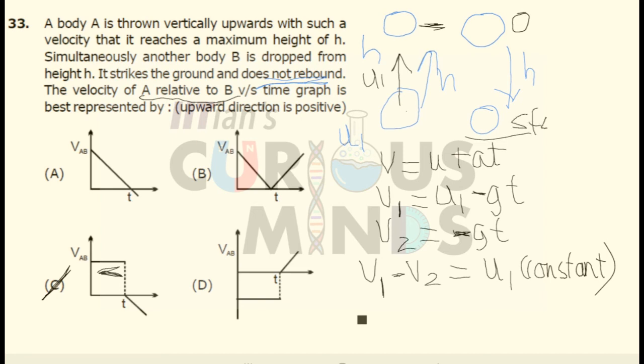When it stops, with respect to the second body the first body will start moving downwards with certain acceleration. If there is acceleration, the graph obtained will be somewhat like this, it will be a slope. So the answer will be C.